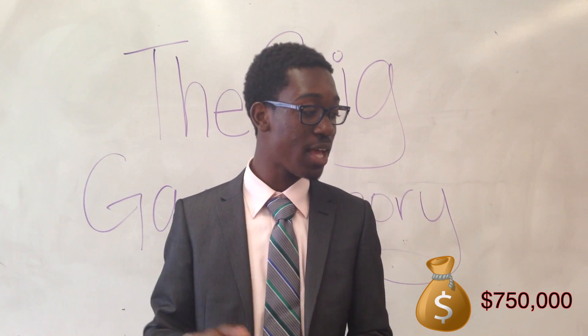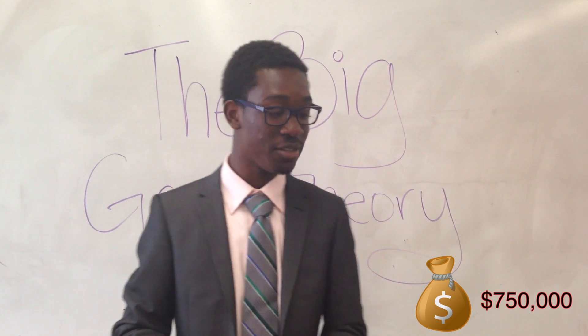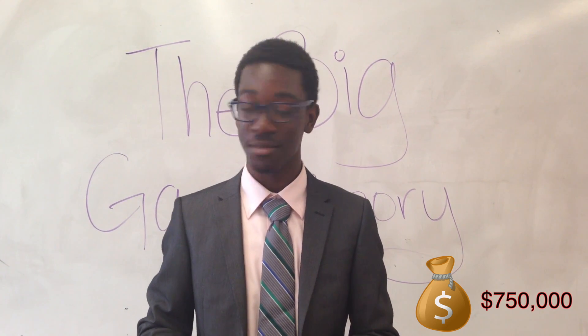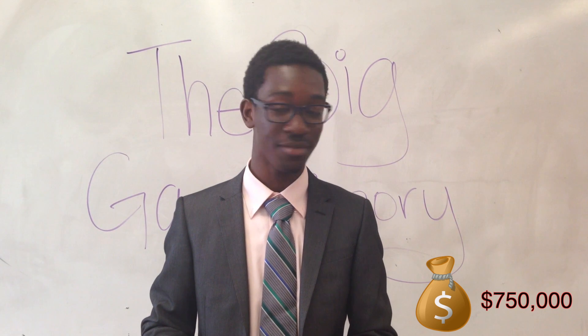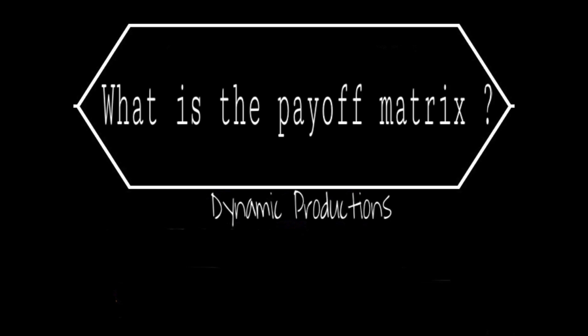You guys have one last question, but this time no choices. What is the payoff matrix? I got this. The payoff matrix represents the interdependence of a duopoly. Each row corresponds to one player and each column refers to the action of another player. It demonstrates how the payoff to each of the two members depends on the action of both.